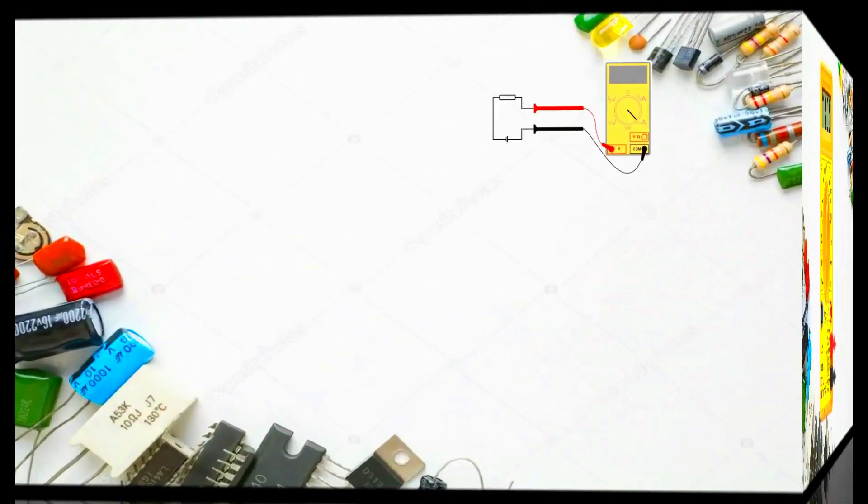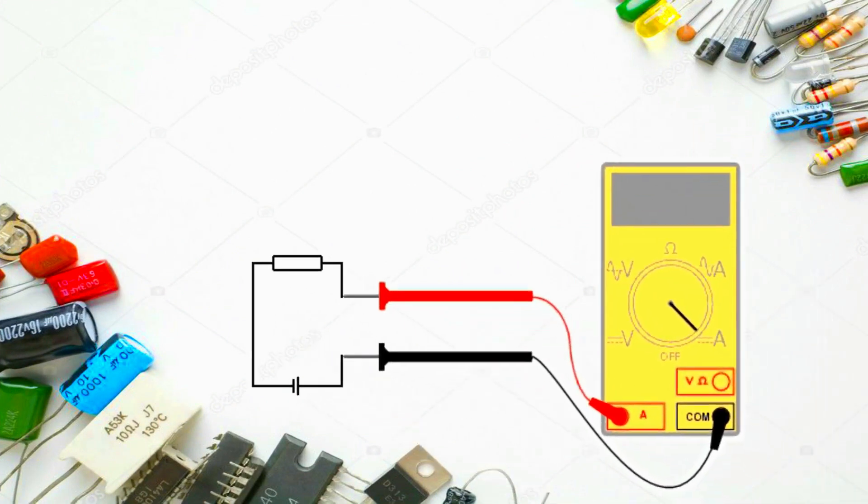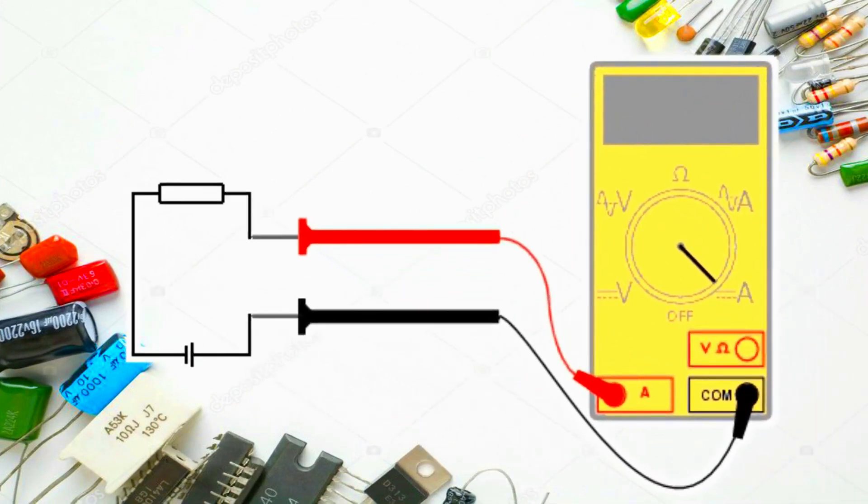DCA, an ampere meter setting. This is used to measure current through DC circuits. The scale settings range from 200 microamps. Direct current amperage is similar to DCV, but instead of giving you a voltage reading, it will tell you the amperage. Don't get confused here. Remember, voltage and current are two different things.